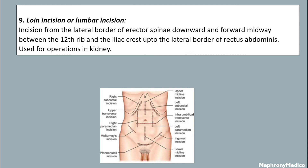The loin or lumbar incision is an incision from the lateral border of the erector spinae, downward and forward midway between the twelfth rib and the iliac crest, up to the lateral border of the rectus abdominis. It is used for operations on the kidney.